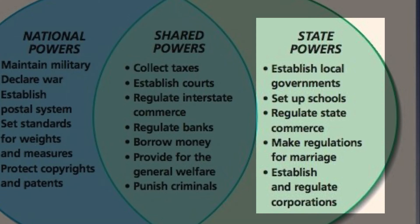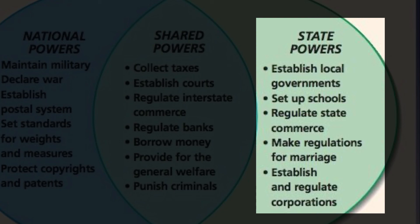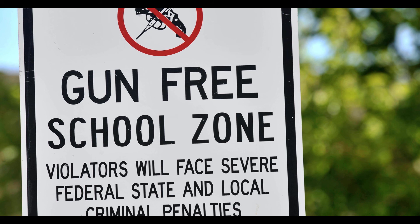Under the Tenth Amendment of the United States Constitution, states are responsible for executing their own educational policies, among a variety of other powers like regulating interstate commerce, issuing licenses, conducting elections, and so on. The Gun Free School Zones Act of Congress was interpreted by the U.S. Supreme Court as an overreach of congressional power because the U.S. Constitution does not grant Congress the power to regulate educational policies for all of the states.